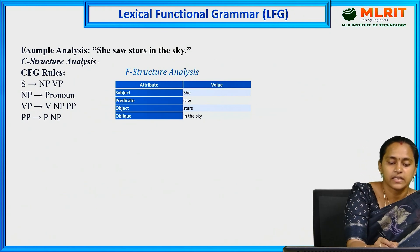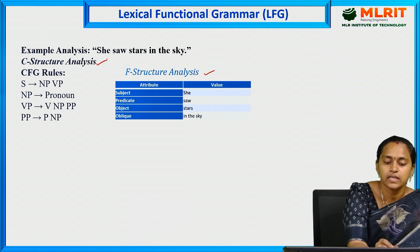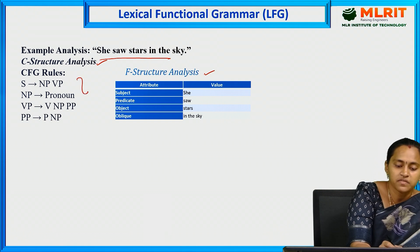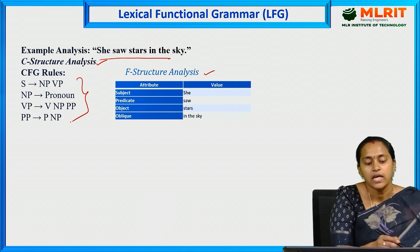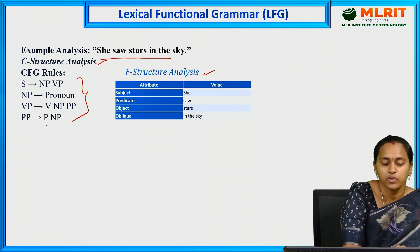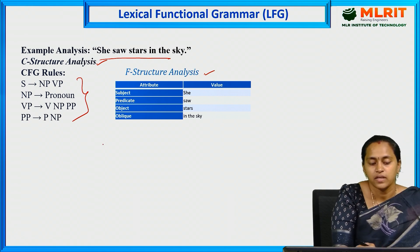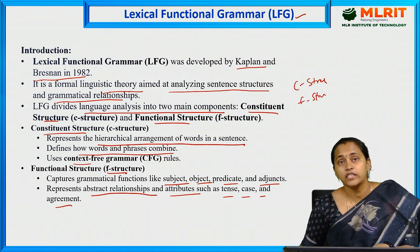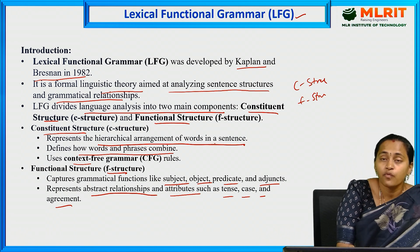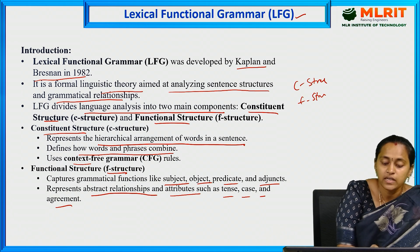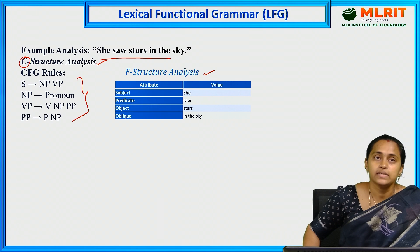Here is an example of C-structure and F-structure analysis. The sentence is: 'She saw stars in the sky.' For C-structure, using context-free grammar rules: a sentence contains a noun phrase and verb phrase; the noun phrase contains a pronoun; the verb phrase contains a verb, noun phrase, and preposition; the prepositional phrase contains a preposition and noun phrase. This hierarchical arrangement defines how words and phrases combine.